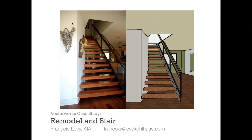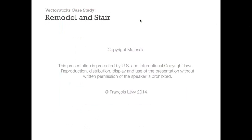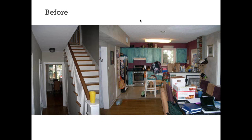Moving into the slides with the obligatory copyright statement, Francois introduces the project: a 1934-era house in central Austin close to the university, with a gambrel roof design. The before slides show a very well-lived-in, chaotic house with previous attempts at faux painting that just weren't working for the owner anymore given his life changes and family situation.